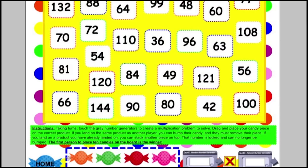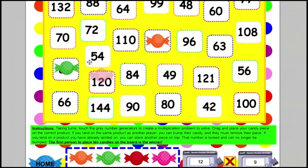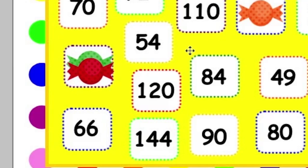The second is candy bump, and you may already know how to play this game. Students pick their own colored candy to play. When it's their turn, they touch the two random generators and solve the multiplication problem. They place their candy on that product. If another person also lands on that product, they put their candy on top and they have locked that space. Nobody else can be on that space. The person who ends up being on the most amount of products wins the game.